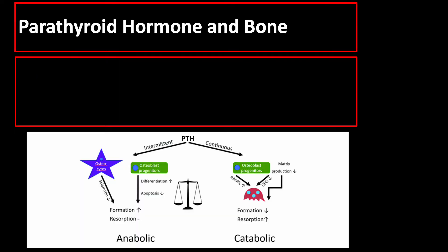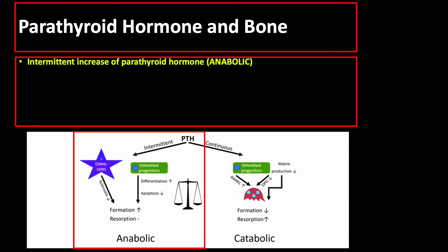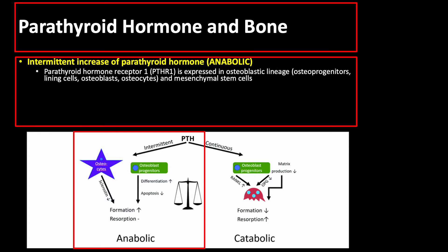The parathyroid hormone has both anabolic and catabolic effects on the bone, depending on the modality of application. If parathyroid hormone is increased intermittently, then the effect is anabolic or bone formation. Parathyroid hormone receptor 1 or PTHR1 is expressed in osteoblastic lineage, such as osteoprogenitors, lining cells, osteoblasts, osteocytes, and mesenchymal stem cells.